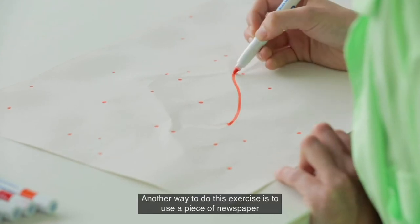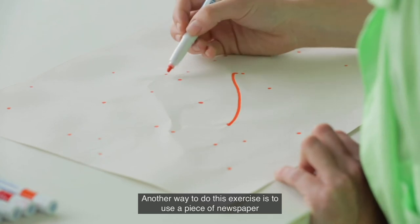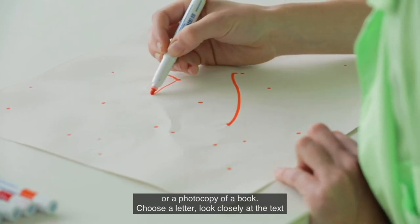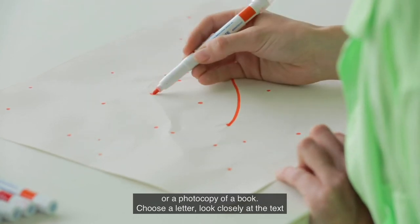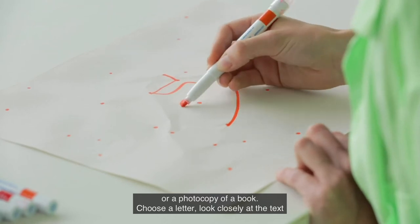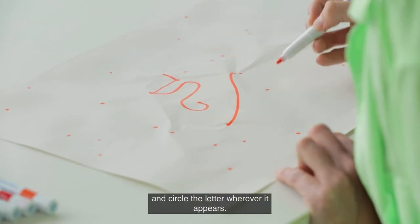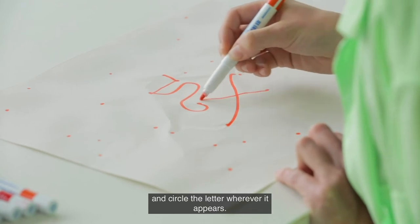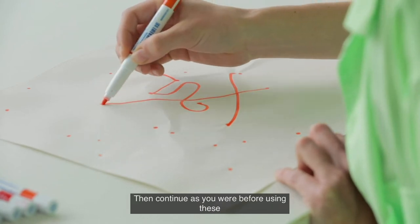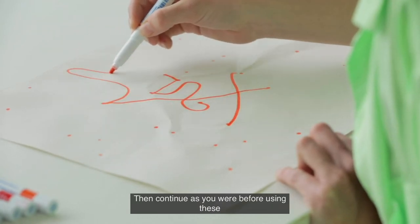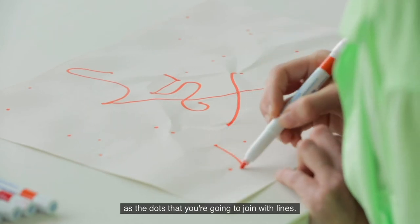Another way to do this exercise is to use a piece of newspaper or a photocopy of a book. Choose a letter, look closely at the text, and circle the letter wherever it appears. Then continue as before, using these as the dots that you're going to join with lines.